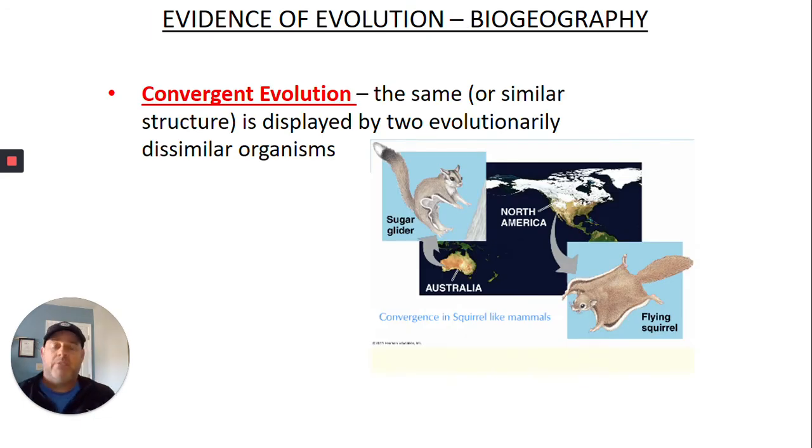I forgot even the word convergent evolution, even though it was in bright red letters there. Convergent evolution, the same or similar structure is displayed by two evolutionary dissimilar organisms. Mammals and marsupials are not the same thing, but they have evolved the same features. They have evolved the same structure, like that extra skin based on the same evolutionary pressures being put on them. So when the same pressures are put on different organisms from around the world, similar predators, similar climates, food supply, then the same pressures are put on them. And a lot of times they adapt the same features. And that's convergent evolution.